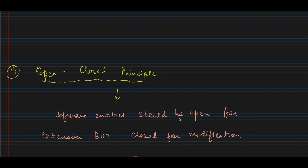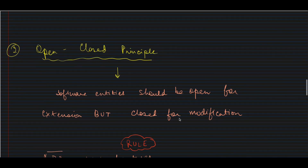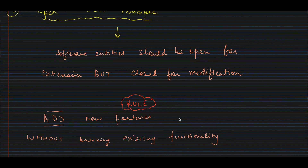Just like the child doesn't need to go back and modify the pillars to build the rest of the house, once a class or module is designed, it's fine to extend it — create child classes, add new features — but don't go back and modify the source code. Open Closed Principle encourages the use of inheritance: extend your base class, create child classes, override functionality, add new features — just don't break existing functionality.